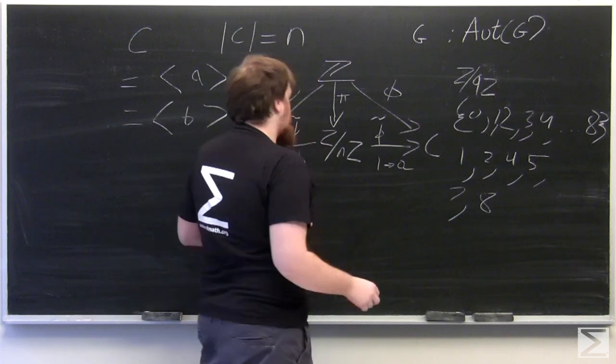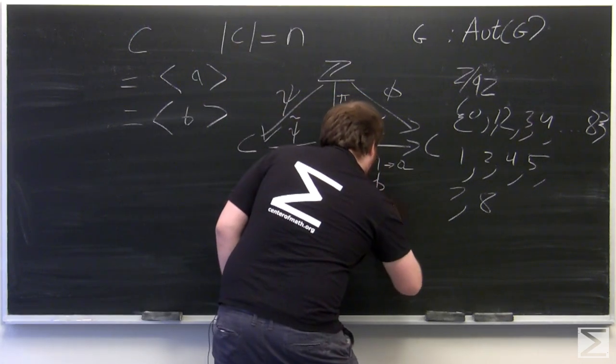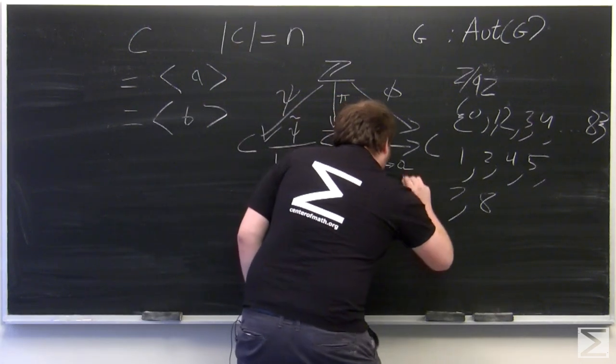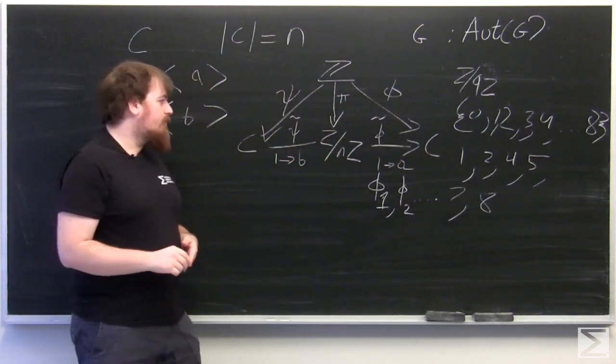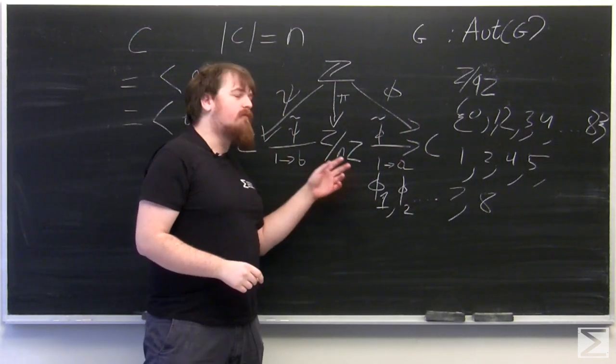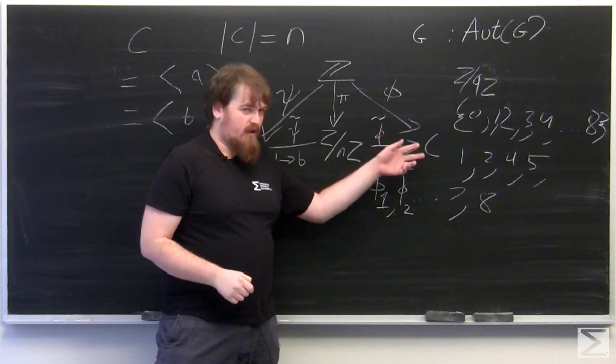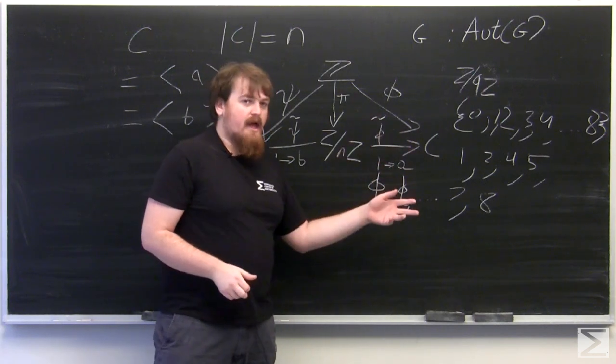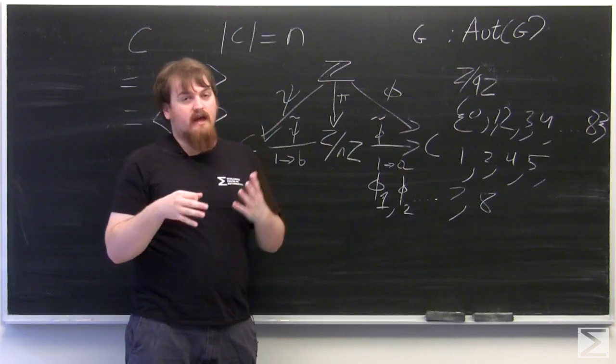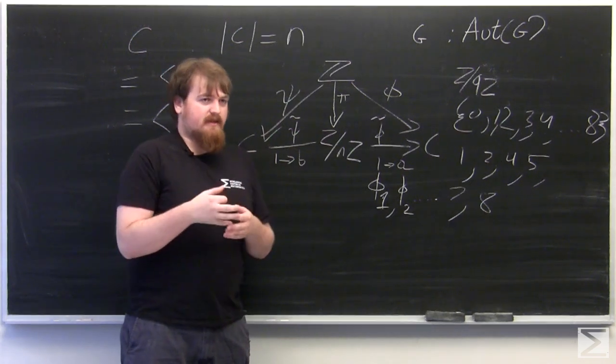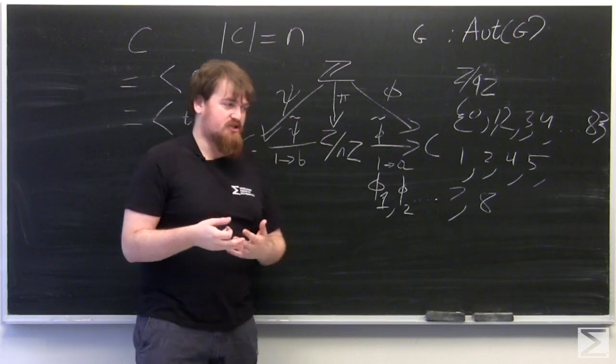We can call these phi 1, phi 2, etc., in that phi n of 1 is defined to be n and everything else it sends is automatically decided by the properties of the group addition.